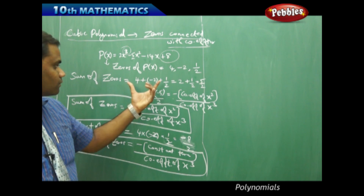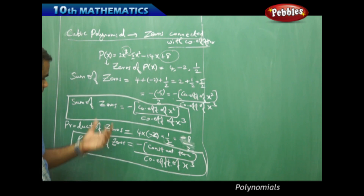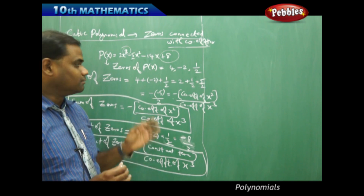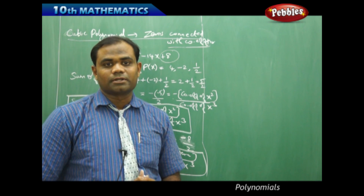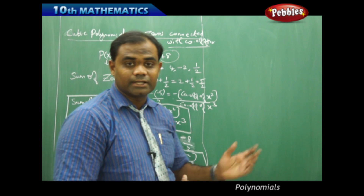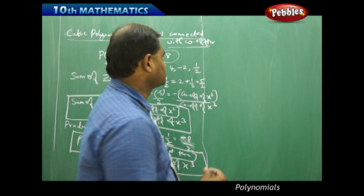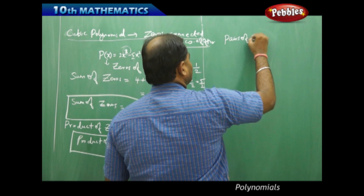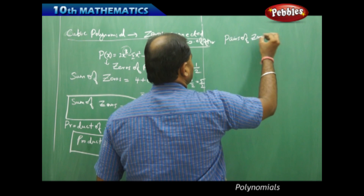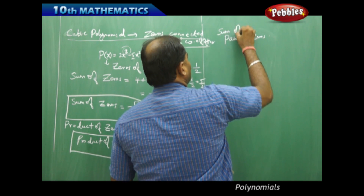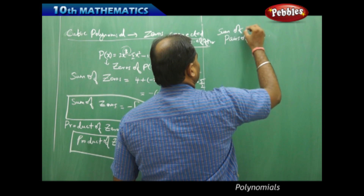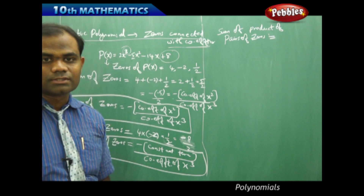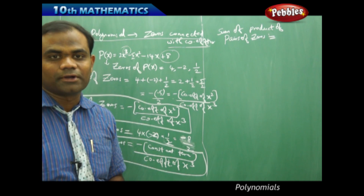There is one more property identified for cubic polynomials, where sum and product of zeros relate to the coefficients. But if two of the zeros are multiplied and then added simultaneously in pairs — the sum of product of pairs of zeros — there is also a relation obtained with the coefficients. Let's see what that relation is.